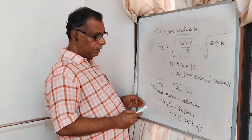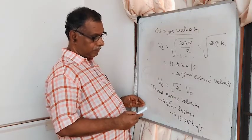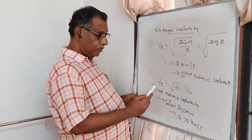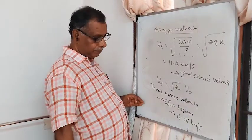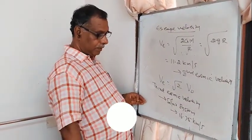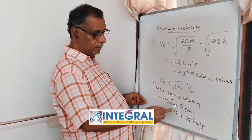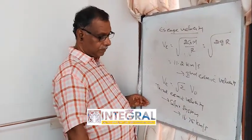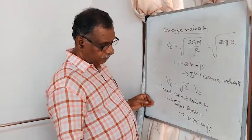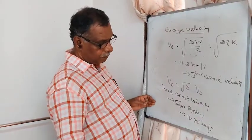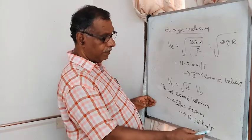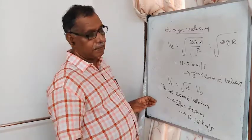The Third Cosmic Velocity is the velocity with which a body must be projected so that it goes beyond the solar system. Its value is approximately 16.75 km/s.